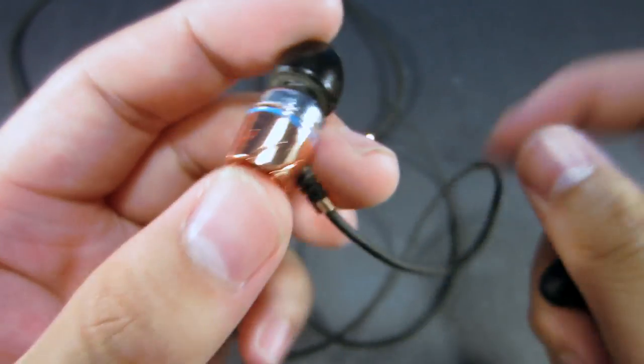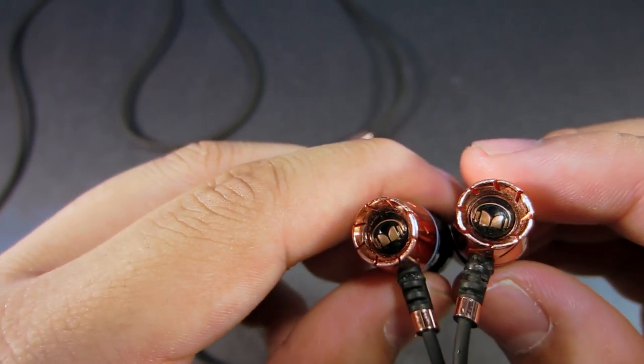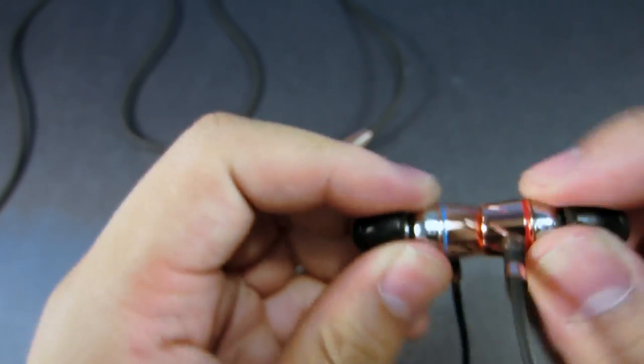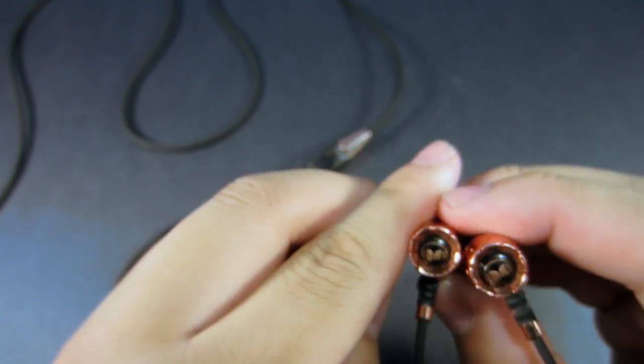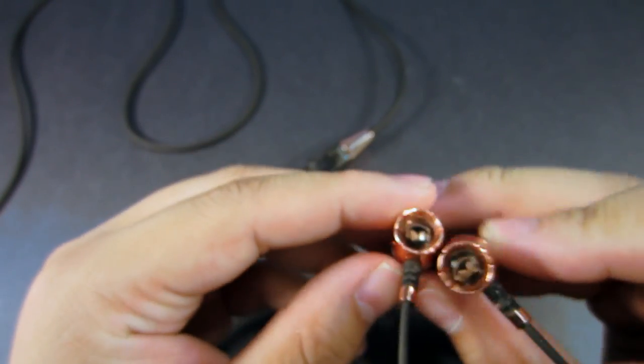Moving up to the top we have the in-ear speakers themselves. As you can see they do look very nice. On the back we have the Monster logo and they do have a full metal construction as you can hear. That's something that's very nice about the ear speakers themselves.